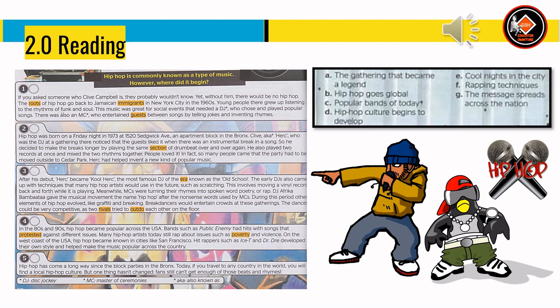In the 80s and 90s, hip-hop became popular across the USA. Bands such as Public Enemy had hits with songs that protested against different issues. Many hip-hop artists today still rap about poverty and violence. On the west coast, hip-hop became known in cities like San Francisco. Hit rappers such as Ice-T and Dr. Dre developed their own style and helped make the music popular across the country. Hip-hop has come a long way since the block parties in the Bronx. Today, if you travel to any country in the world, you will find a local hip-hop culture, and fans still can't get enough of those beats and rhymes.